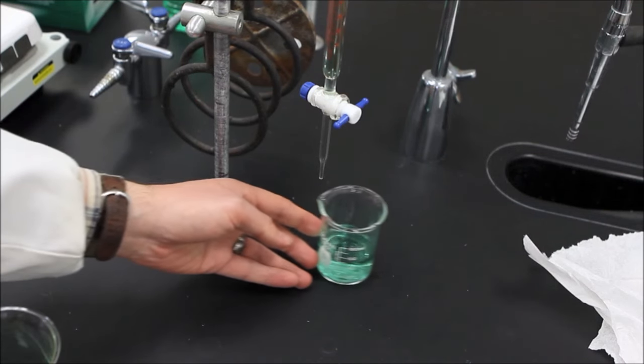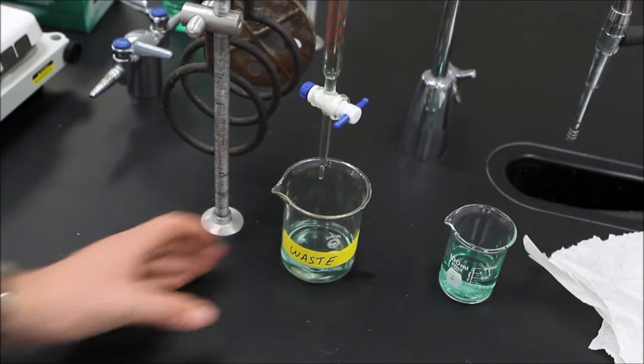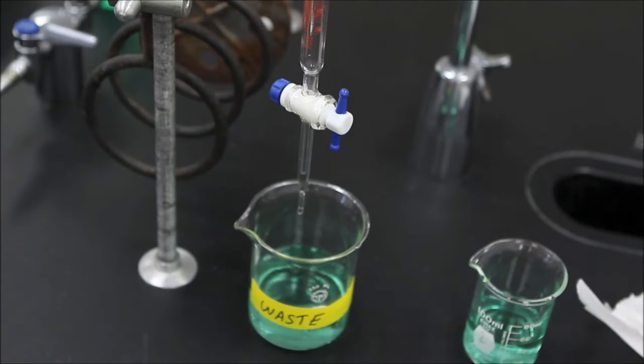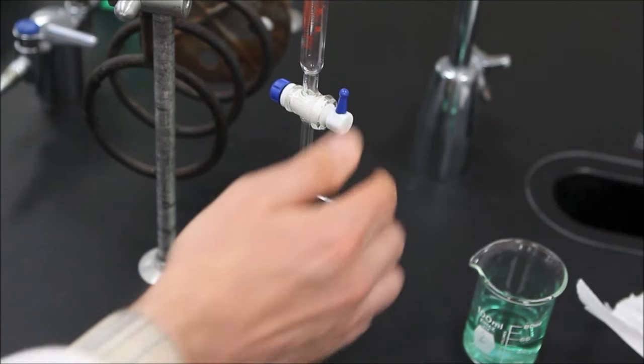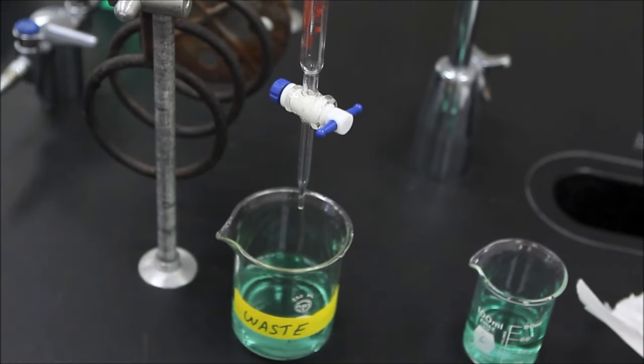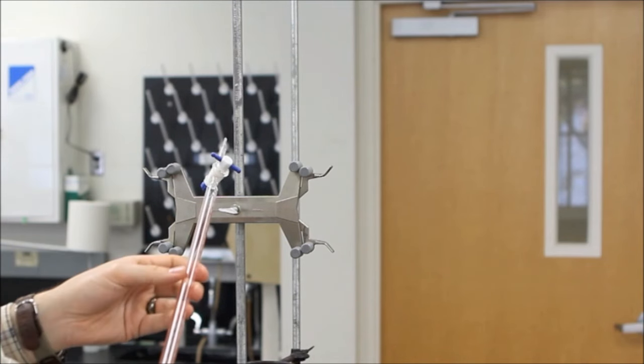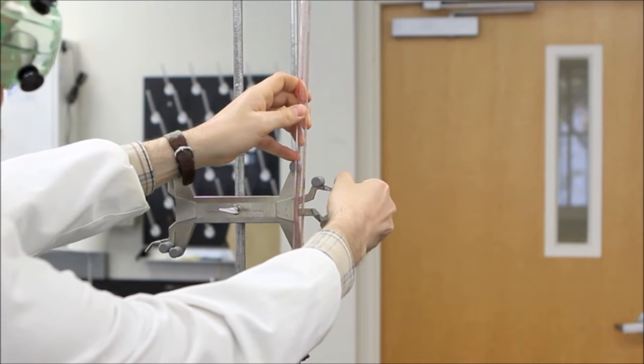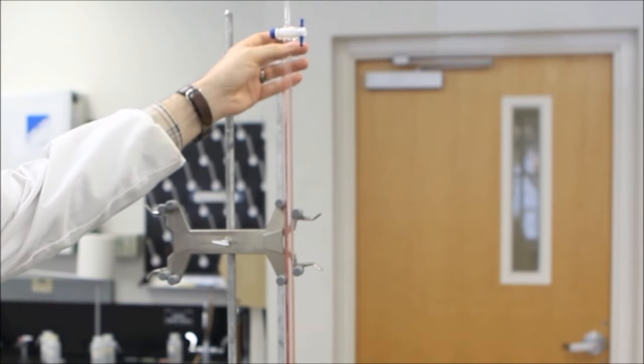When we are finished with the burette, first allow the solution to fully drain out of the burette, including the tip, and then clean it as before with two or three small volumes of deionized water. Finally, hang the clean burette upside down with the burette clamp, making sure that the stopcock is fully open to allow the burette to dry most efficiently. Thank you.